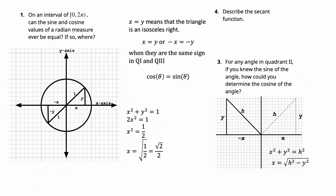On an interval of 0 to pi, closed at 0, open at 2 pi, can the sine and the cosine values of a radian measure ever be equal? As you rotate the radius around, at one point in the first quadrant you get an isosceles right triangle, which means that x and y are actually equal to each other. Since the coordinate (x, y) equals (cosine θ, sine θ) on the unit circle, we know that sine equals cosine there.